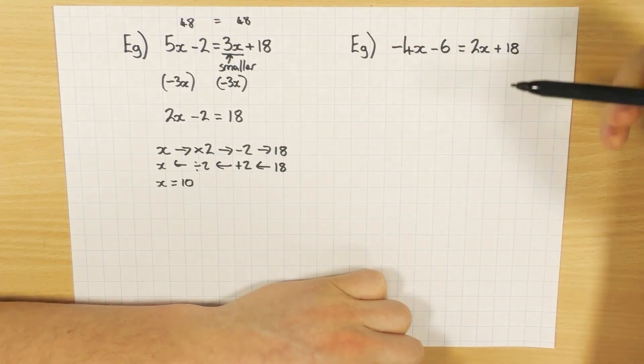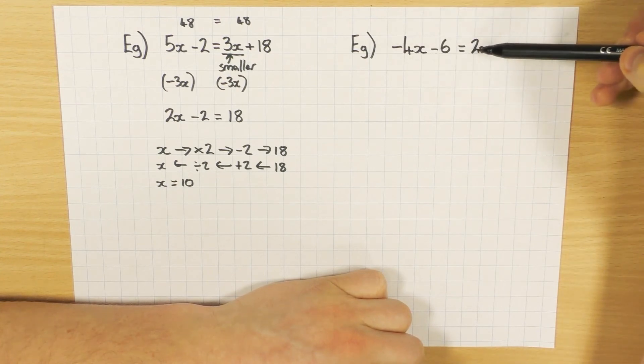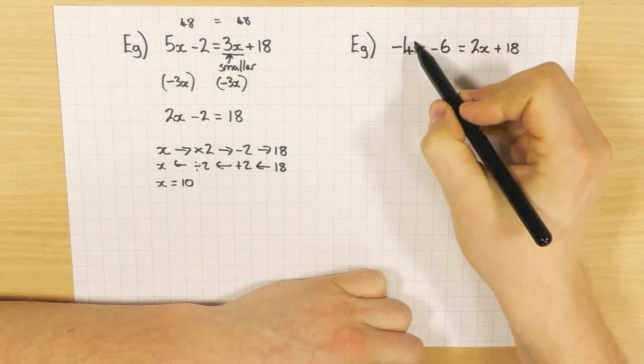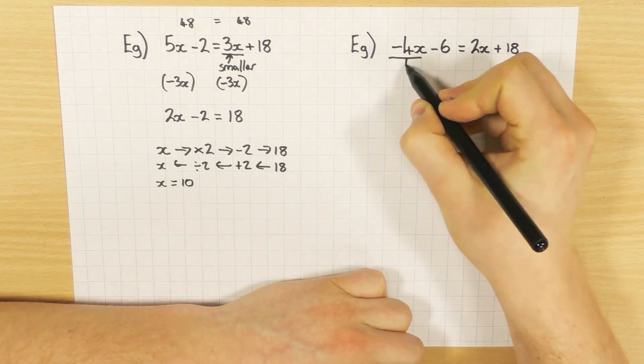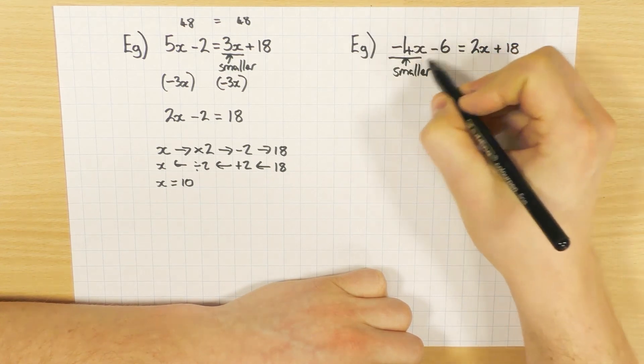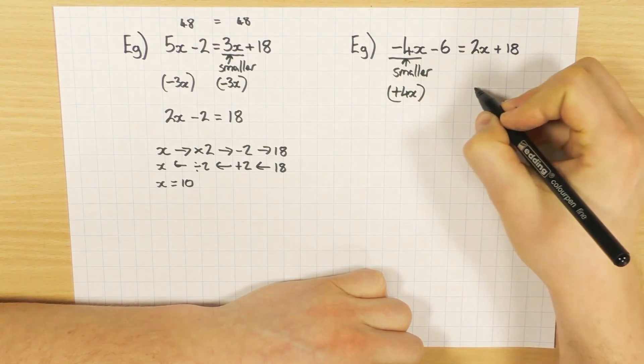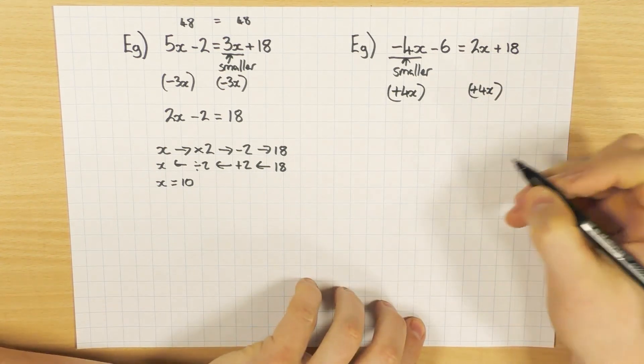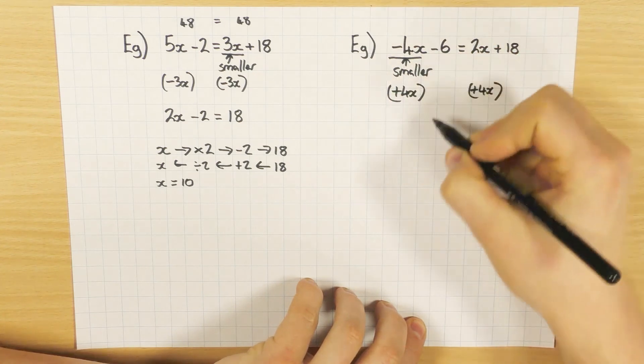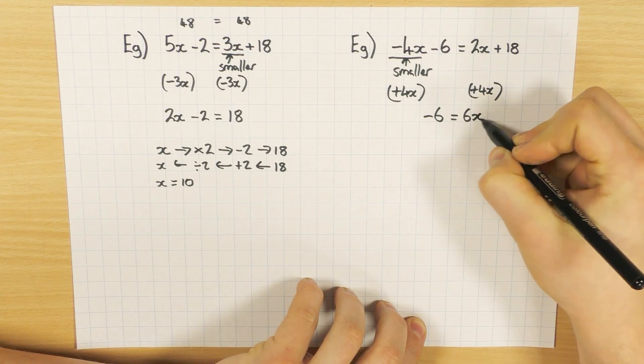This one here, again, I need to spot which one is smaller, this one or this one. Now most people will go, oh, 2 is smaller than 4. Be careful. This is minus 4x, and this is plus 2x. So minus 4 is actually the smaller one here, so be careful with that. And to get rid of it from the left-hand side, I do the opposite. So I add 4x to this side, and just like before, you must do it to both sides. So I'm going to add 4x to both sides. On the left-hand side, that will leave me with minus 6. 2x plus 4x is 6x, plus 18.